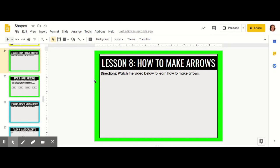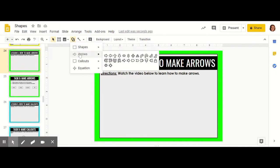In this video, we are going to learn how to make arrows. The first step is to go up to the toolbar and click the shape button, then go down to the arrow row.